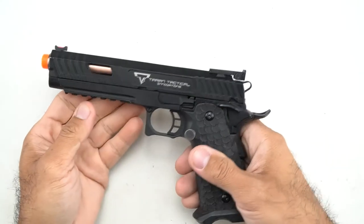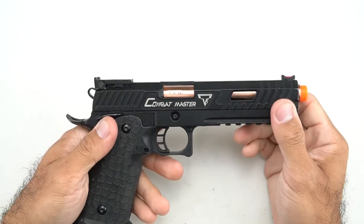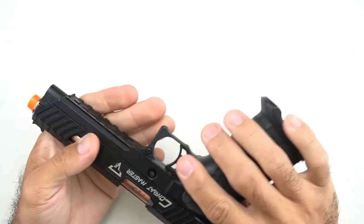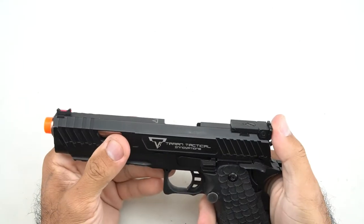I'm going to show you how to do a quick takedown of the TTI Combat Master by JAG Arms. This should also apply to high-capa clones of similar build.